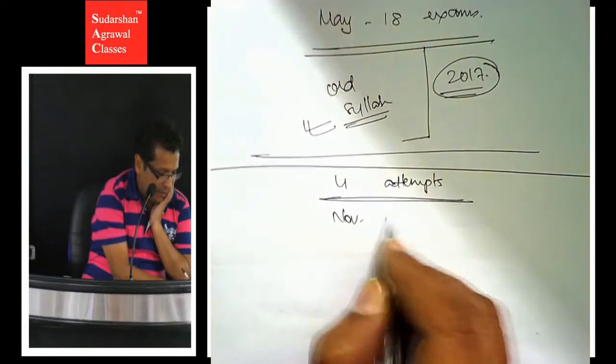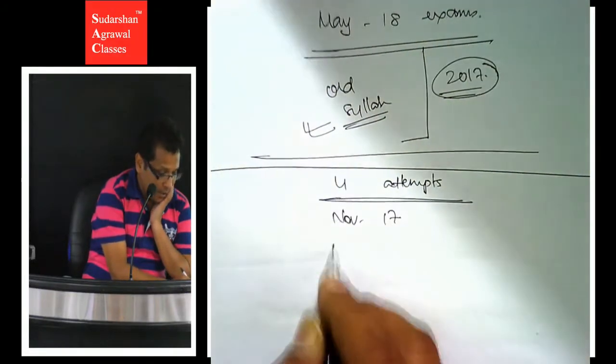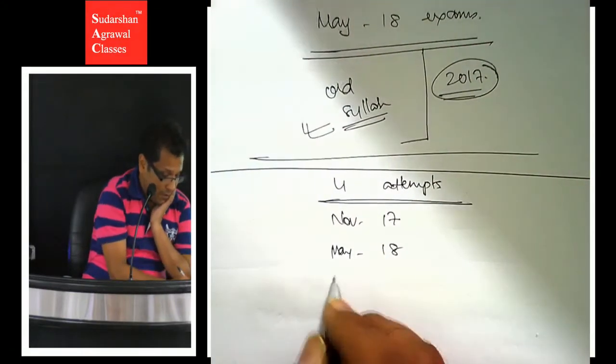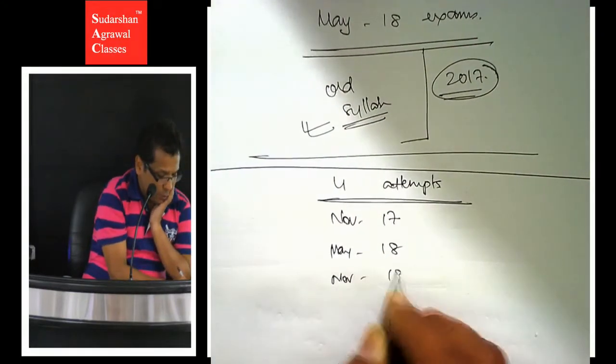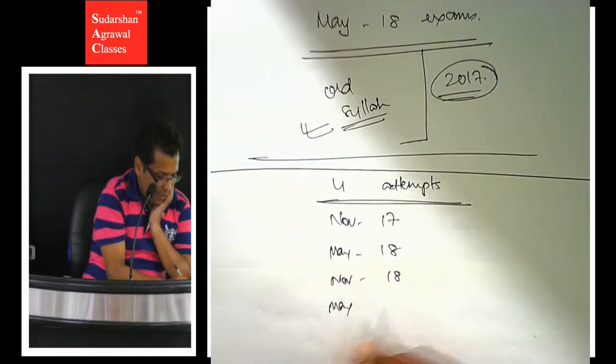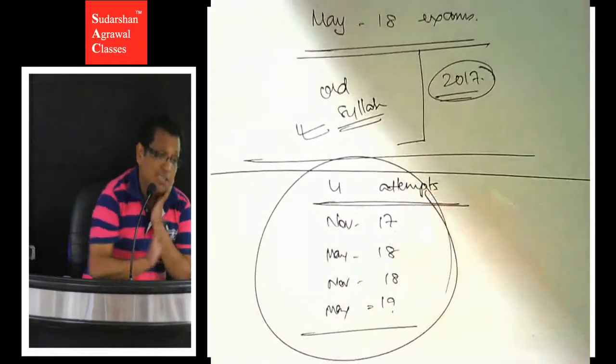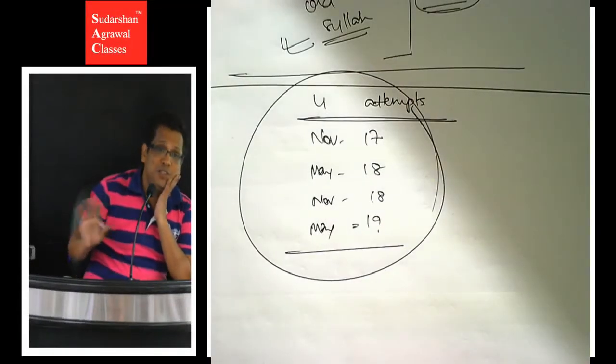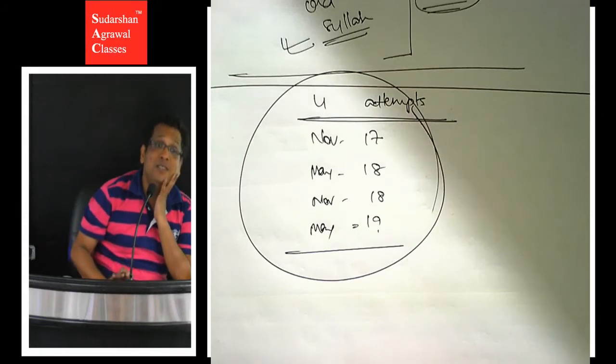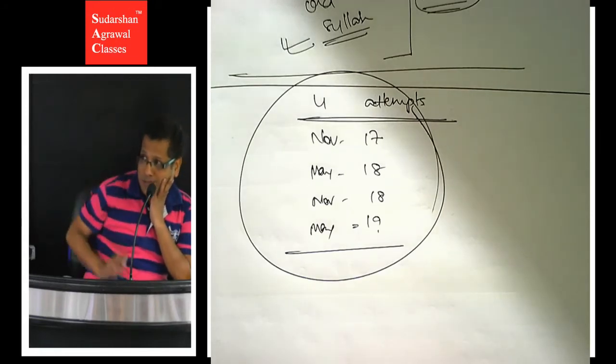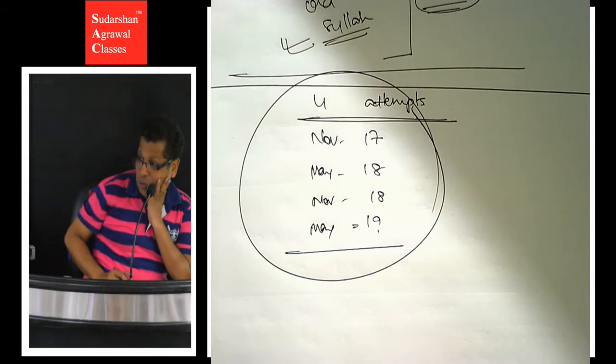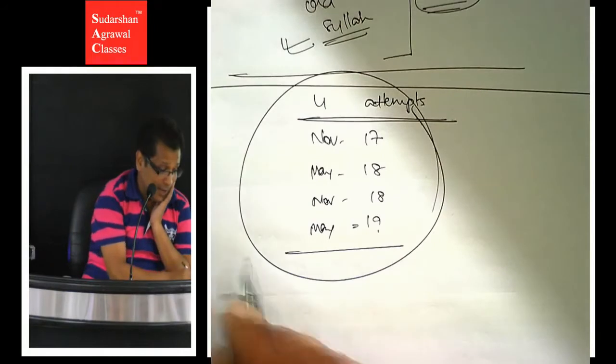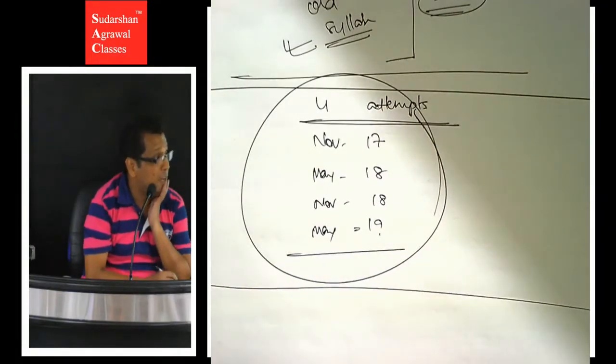You will get an exam in November 17, May 18, November 18, and last, you will get an exam in May 19. After that, the institute is not going to take the exams of the old syllabus students. So what is the stake for us? If we are not able to clear these 4 attempts, then you will get exam in the new syllabus.